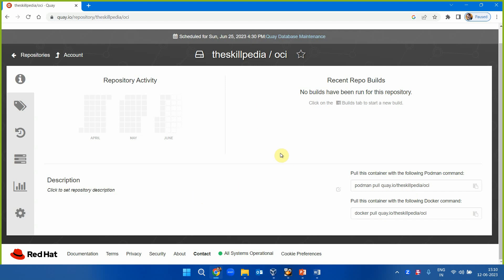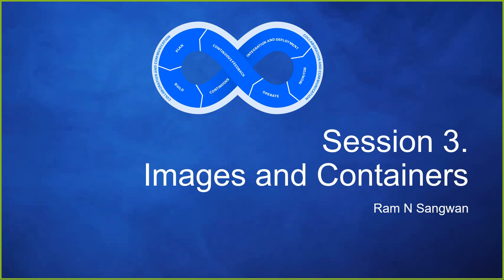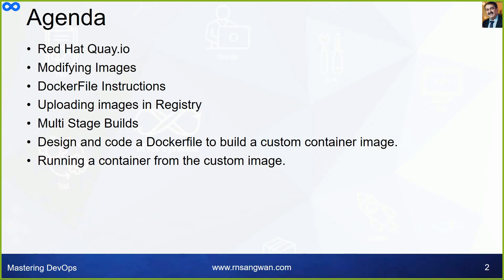Once you have the account, you're good to go with the next lab sequence. Let's start the lecture. I want to first explain the concept of images and how to build them. Session 3 covers images and containers. The agenda includes Red Hat quay.io, creating and modifying images, writing instructions in a Dockerfile, uploading images to the registry, and multi-stage builds.